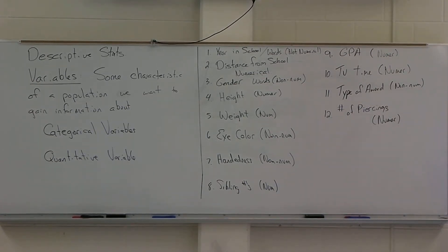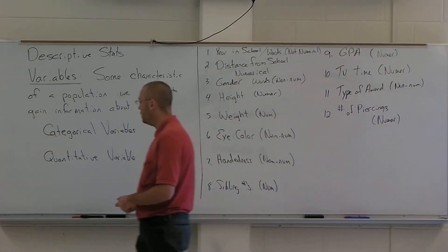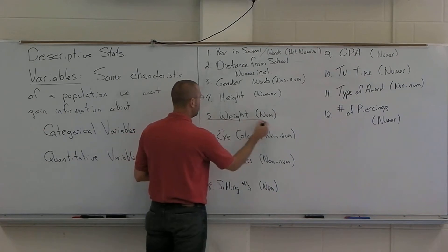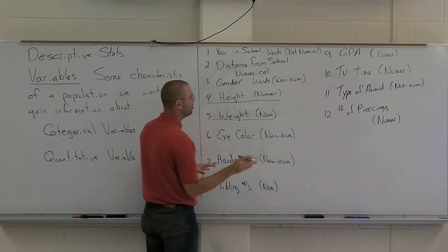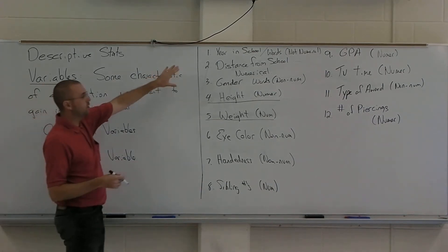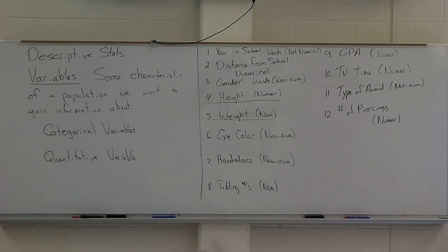Alright, so here we have a bunch of information that one could collect, different variables at play here, different response types that we're getting here. One thing you should notice though, is that in terms of grouping these things together, all the ones with numerical responses, at least in this particular case, all sort of have numbers that you can measure. You can identify them as some are bigger than others. That's what all of the numerical ones have in common. Is that they all represent what are called measures of magnitude.